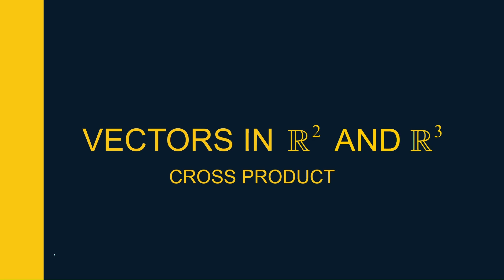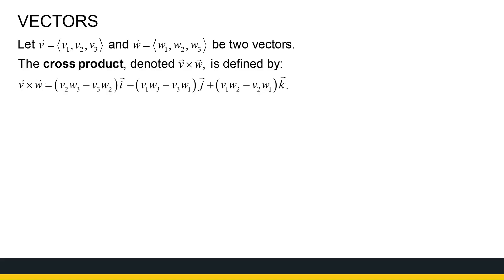We are looking at vectors in R2 and R3, and in this video we're going to be talking about the cross product. The cross product is only defined in R3, so we're going to stick to vectors in R3 for this video. The cross product has got a bit of a messy definition, but we're going to work through it.